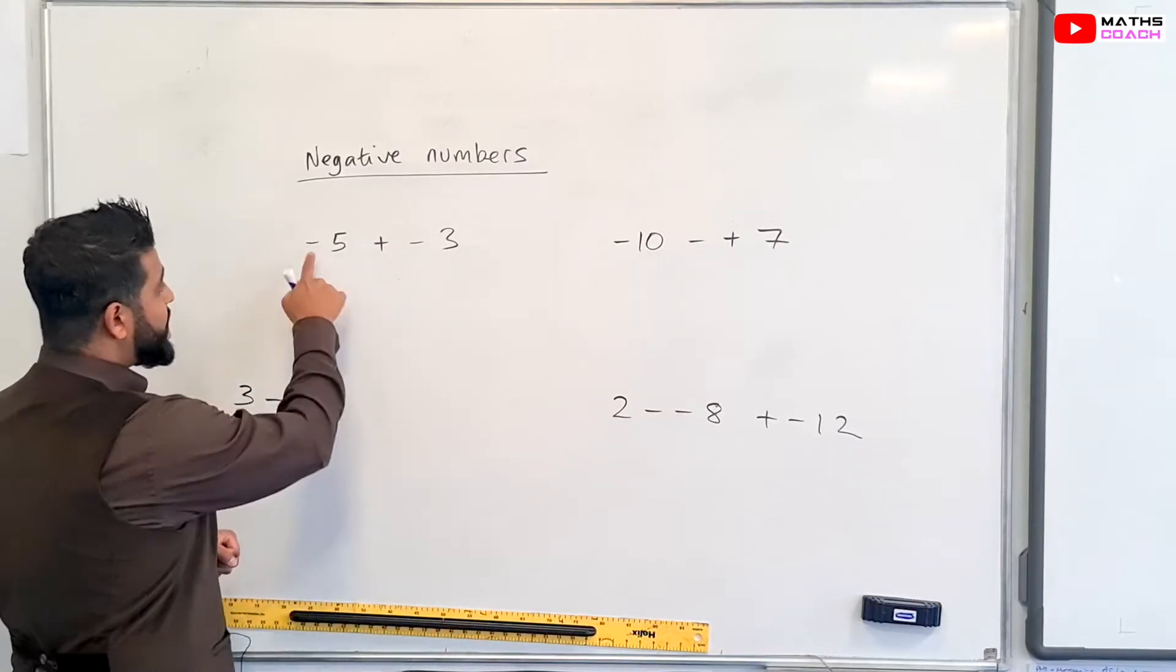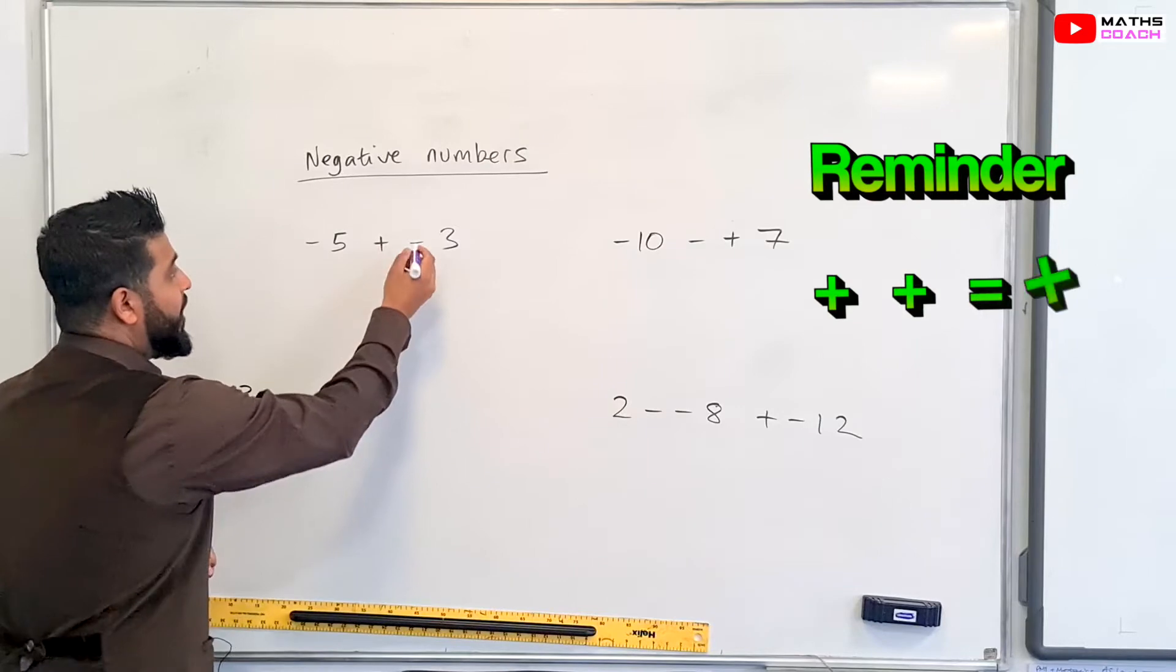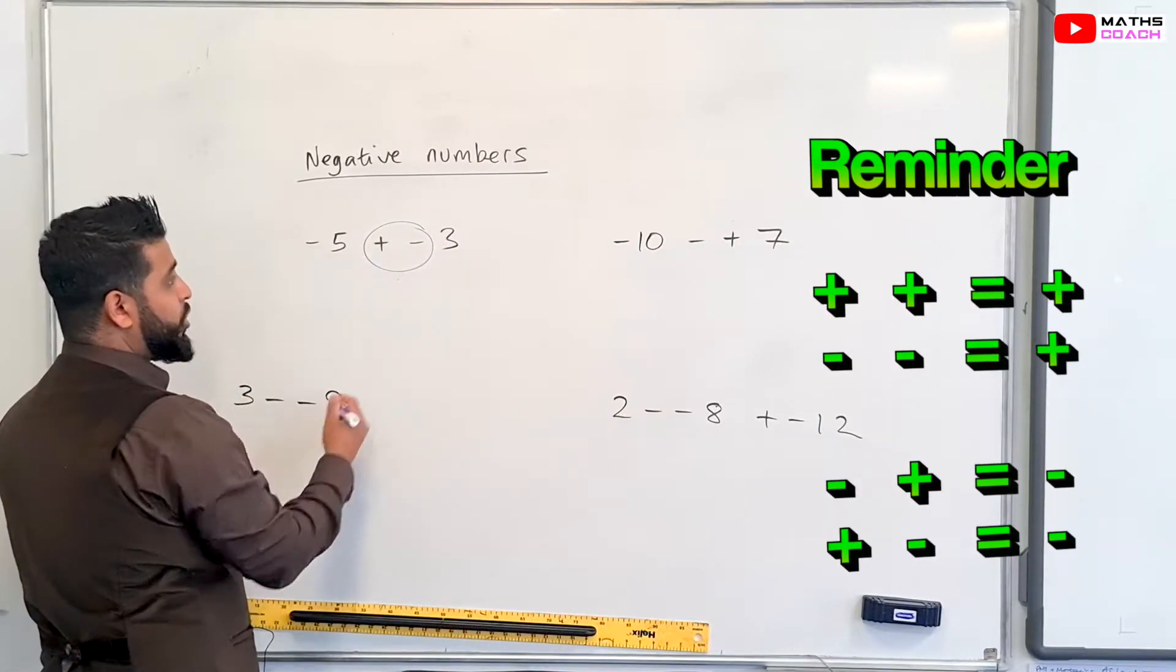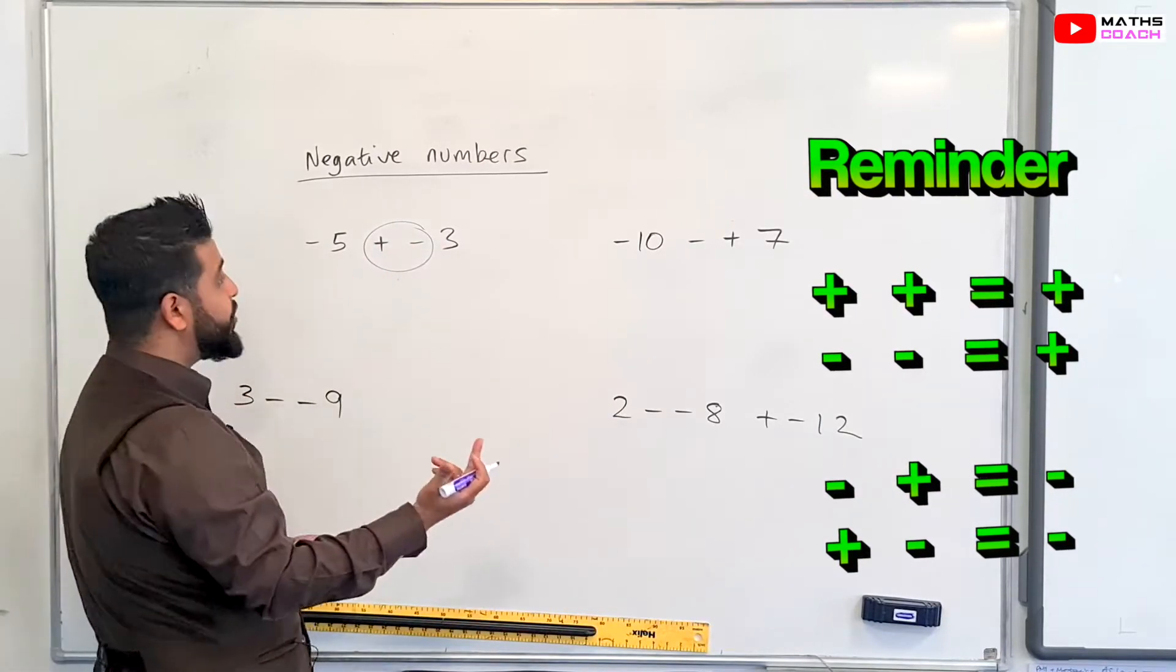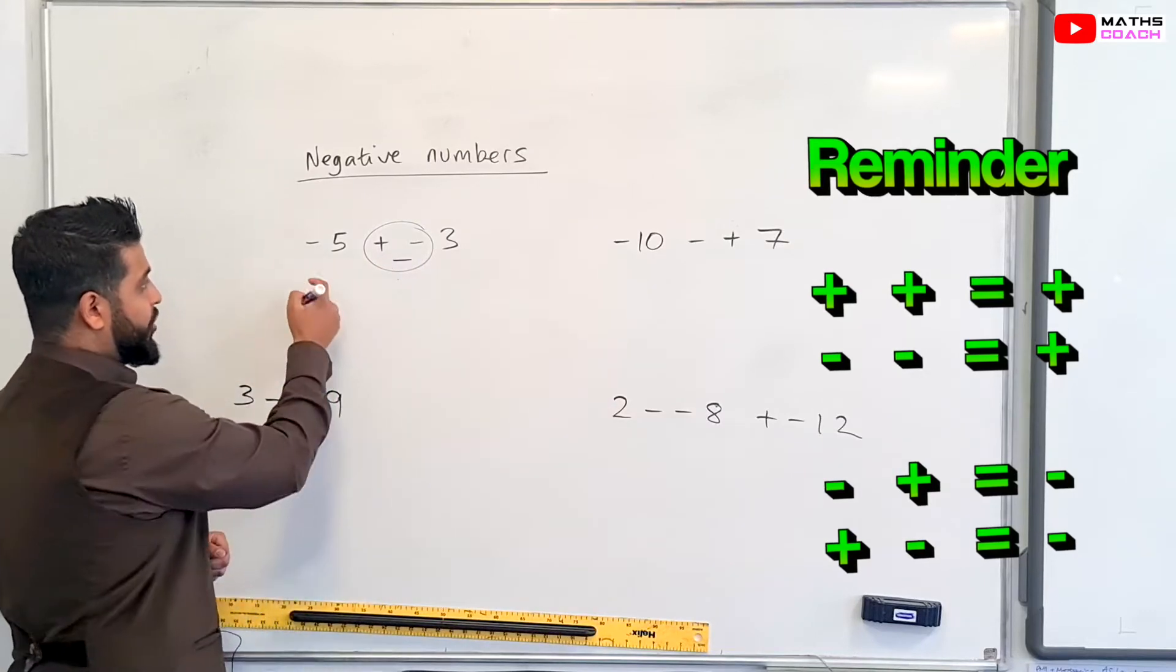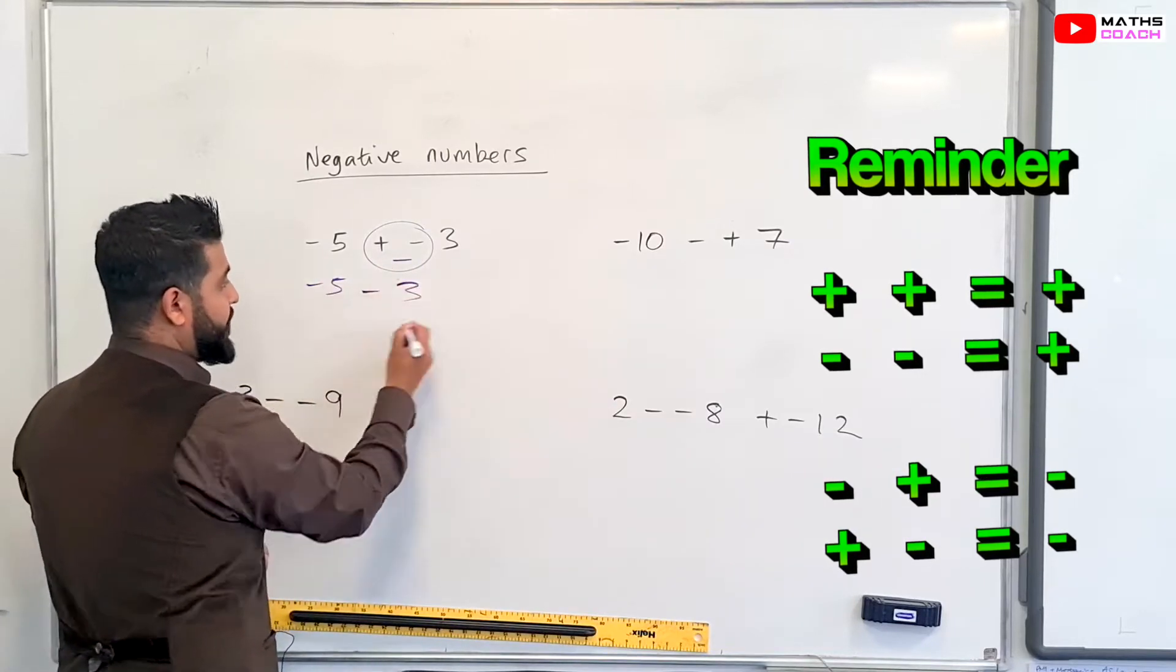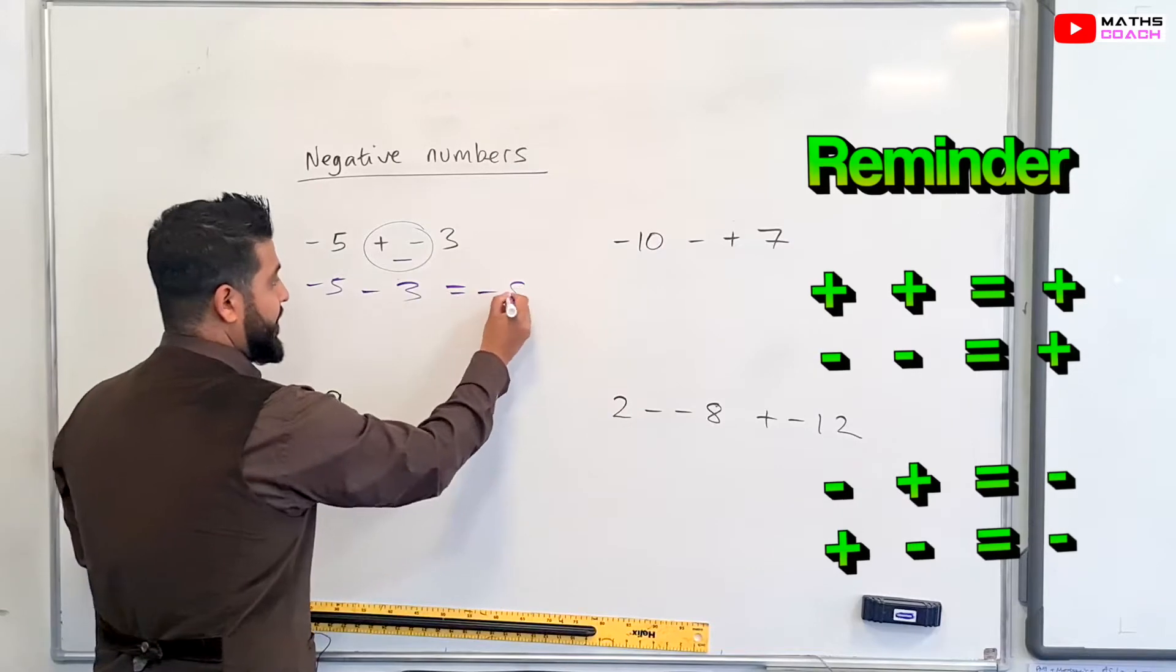So let's have a look at our first one, minus five plus minus three. So these are together. So which sign is more dominant? When you have a plus and a negative next to each other, the negative is dominant. So you end up with minus five minus three, which of course gives us minus eight.